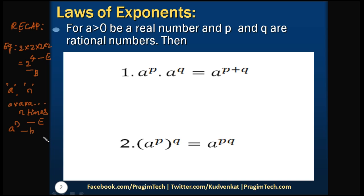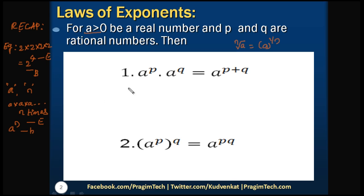Here the powers are in terms of rational numbers. In general, the n-th root of a is nothing but a to the power of 1/n. Since a is under the root, we mention the condition that a should be greater than 0. Here p and q are rational numbers. Let's understand the laws of exponents by considering simple examples.